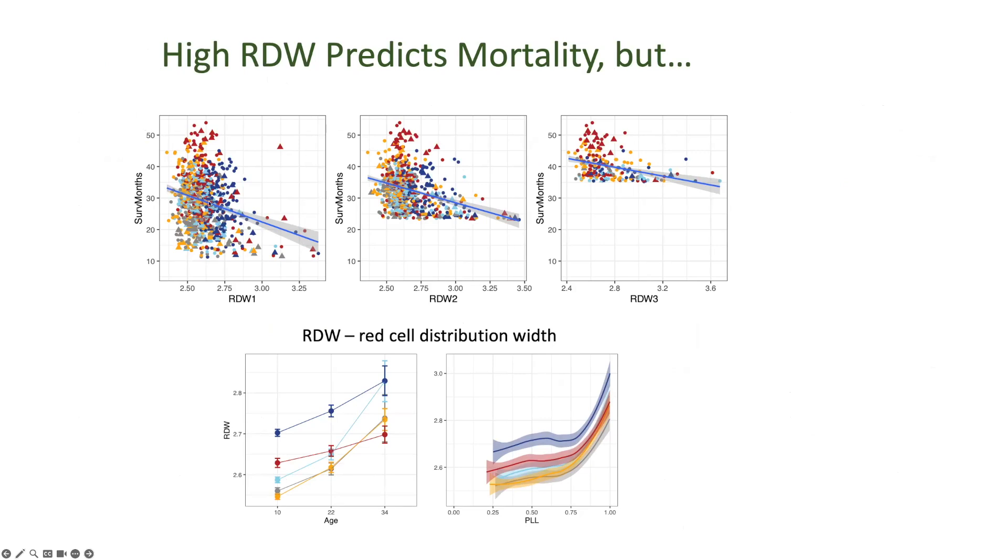So if you look at all the mice together, and you just look at their RDW, this is 10 months, negative slope. There's that one. But there are a lot of 40% mice out here, and these are the 40% mice who had short lifespans. They have high RDW.